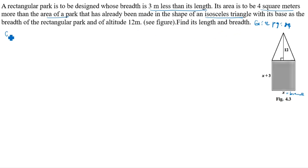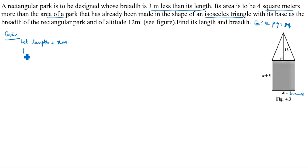So, what is the given data? The rectangular park is to be designed whose breadth is 3 meters less than its length. Let length be equal to x meters. What is the breadth in this case? Breadth is 3 meters less than its length, so breadth equals x minus 3 meters, as per the given question.